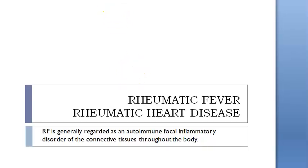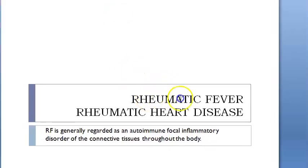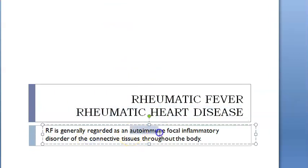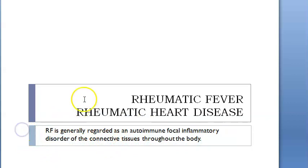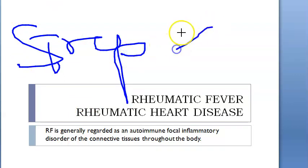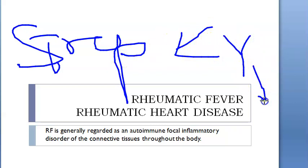In this video, let us look at rheumatic fever, which is also associated with rheumatic heart disease. Basically, this is an autoimmune focal inflammatory disorder. What happens is a person gets a sore throat, is attacked by streptococcus, and the body tries to fight it. However, the antibodies our body prepares will also go and attack our heart, causing rheumatic heart disease.